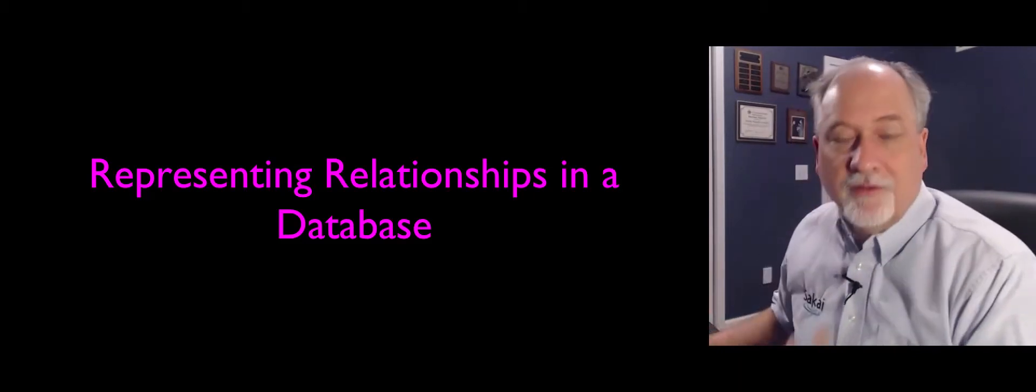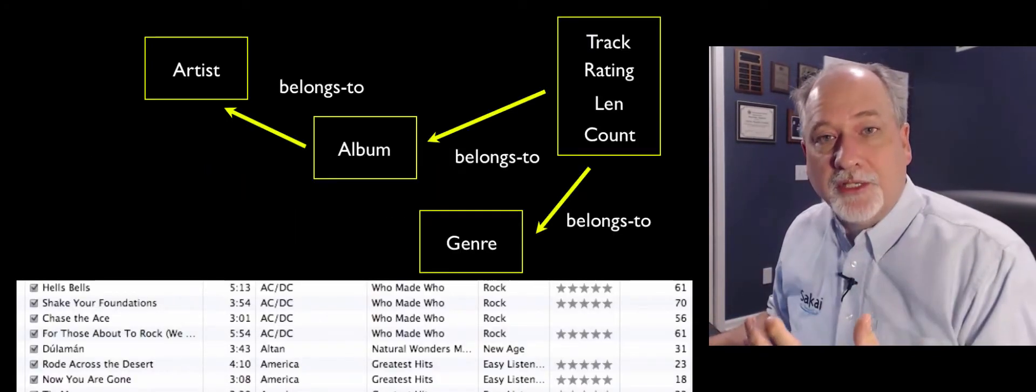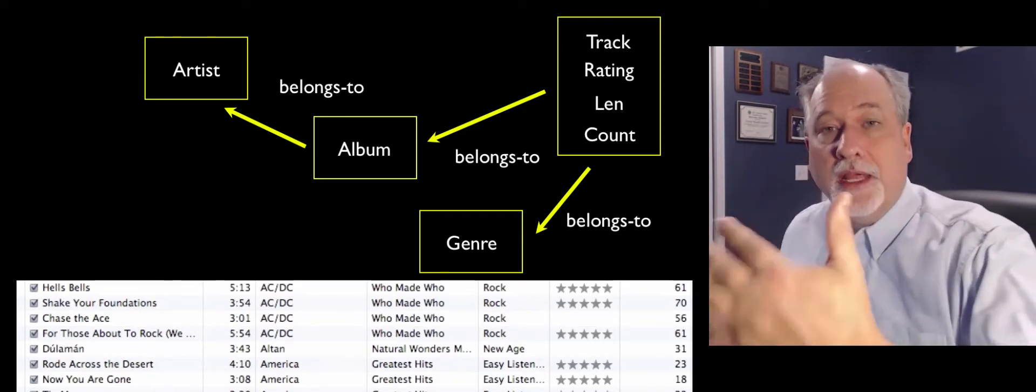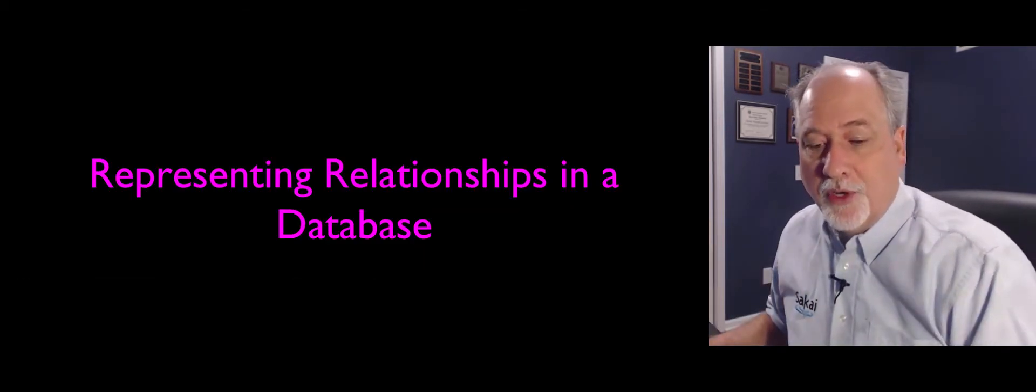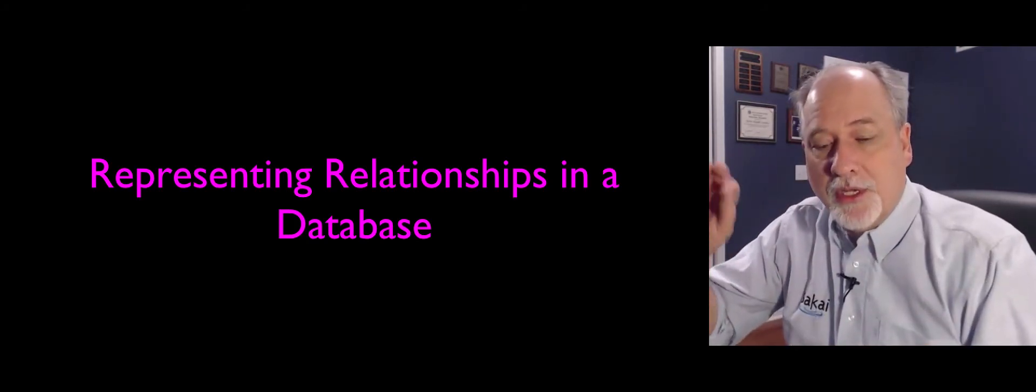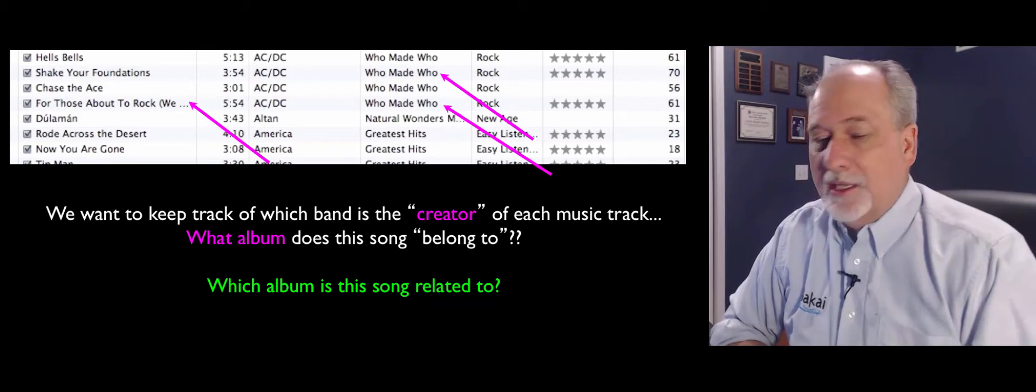Okay, so now we have a picture of objects and how those objects are connected together. And this is going to turn into the table structure that we're going to use. And so now we're going to take how to take those relationships, those little arrows, and represent them in a database.